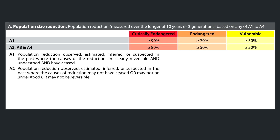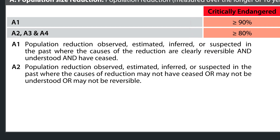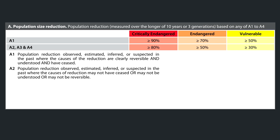The standards are a little bit stricter when the population decline has a known reason but that reason has stopped. For example, if the passenger pigeon had a 90% decline but then everybody stopped hunting it, it would be critically endangered. But if the reason for the decline is not fully understood, or if it's still in place, then it would become critically endangered at an 80% decline under A2.